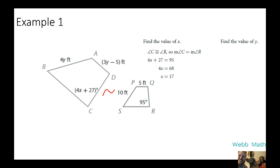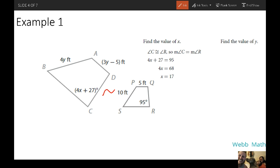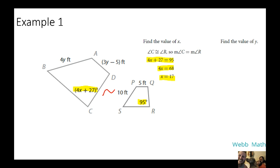Therefore angle C is congruent to angle R. Therefore we'll set them equal to each other and we're going to solve for x using our algebra. It looks like we use subtraction property, got rid of that 27, moved it to the right, then we use the division property, divided by 4, and we got x equals 17. And that's because we knew they were similar, therefore the angles are congruent.